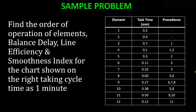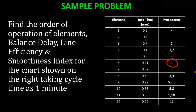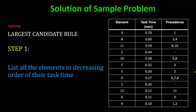Let's understand the precedence relationship. For work element 1, the precedence is dash — meaning nothing — so element 1 requires no other element to be completed first. For element 3, the precedence is 1, meaning before 3 gets completed, 1 has to be done. Before 4: elements 1 and 2. Before 5: element 2. Before 6: element 3. Before 7: element 3. Before 8: elements 3 and 4. Before 9: elements 6, 7, and 8. Before 10: elements 5 and 8. Before 11: elements 9 and 10. Before 12: element 11.